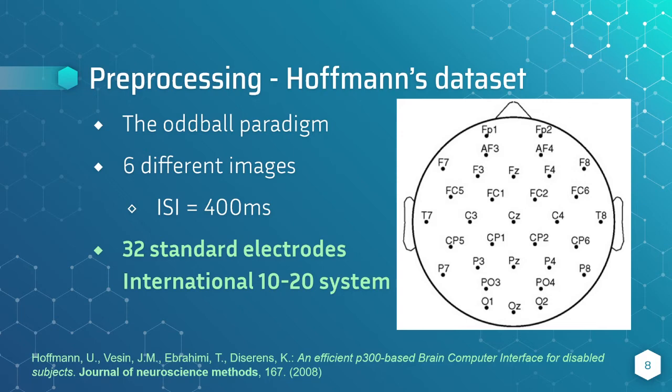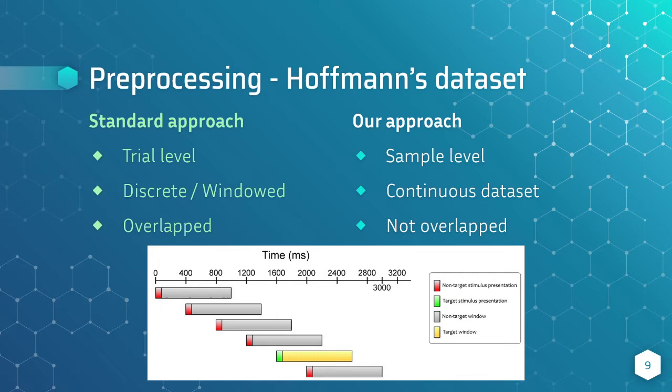However, we propose to vary the standard procedure in the preprocessing phase. The standard approach consists of extracting a one-second window after each stimulus, and then each window is tagged as target or non-target. However, because of the interstimulus interval of 400ms, as I want to show in the figure, the signals in the dataset are overlapped. The last 600ms from the first window are shared with the following one.